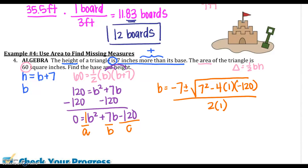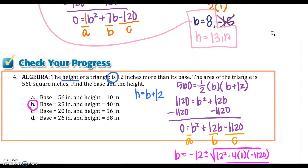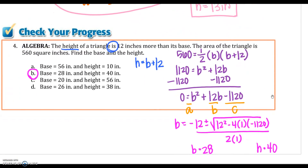Solving with the quadratic formula gives b = 8 or b = −15. Since we can't have a negative length, the base is 8 inches. Plugging back in: h = 8 + 7 = 13 inches. And that's it for section 1 — area of a parallelogram is base times height, and area of a triangle is one half base times height.